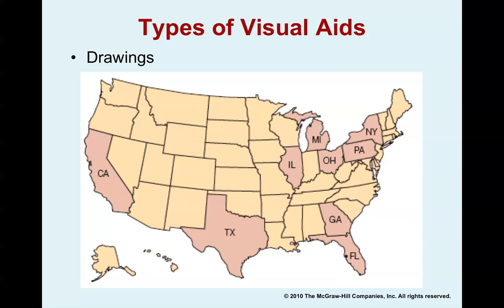You can also use drawings such as maps. This map can help an audience grasp really cool key ideas — it shows that half of all Americans live in just nine states: California, Texas, Georgia, Florida, Illinois, Michigan, Ohio, Pennsylvania, and New York. That means 41 other states contain the other half of the country. When I first saw this, it was amazing. You can show these kinds of facts with drawings and really draw in your audience.